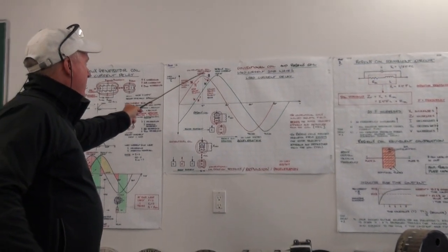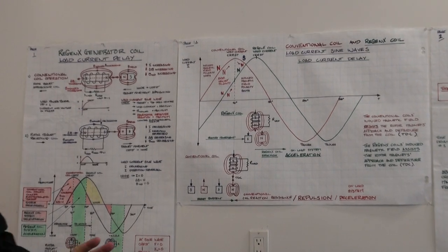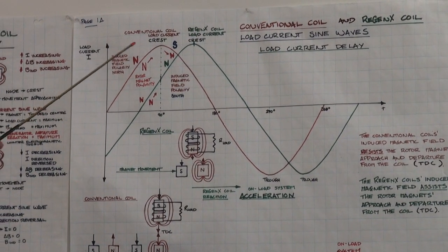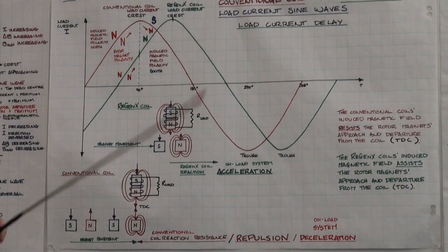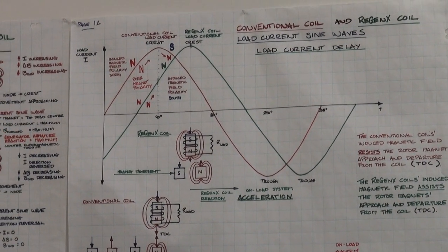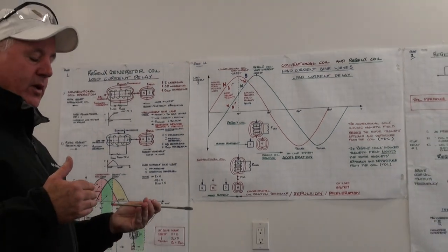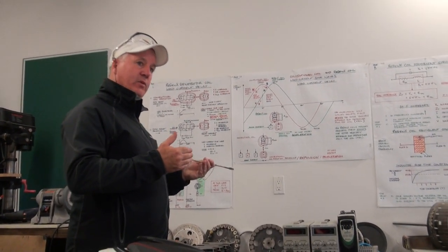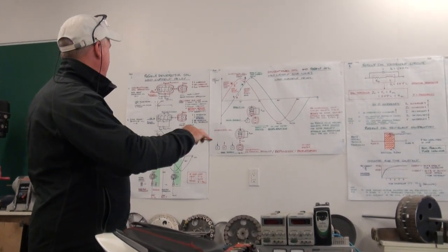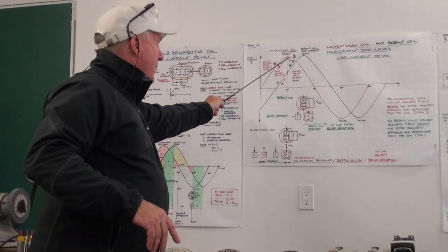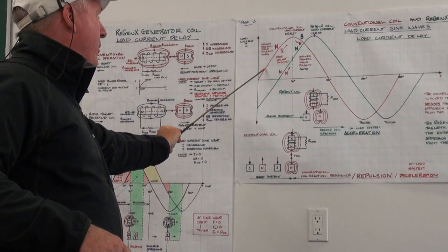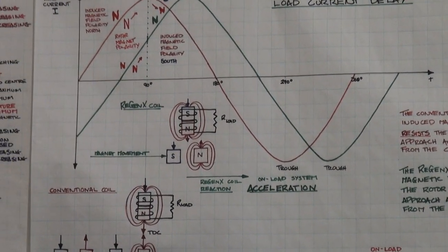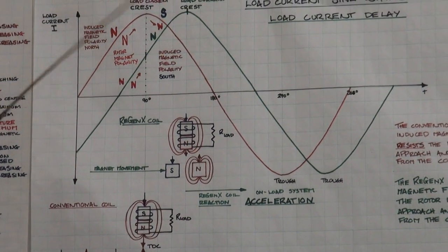The conventional coil in the prototype establishes the rotor magnet's physical position relative to the coil's core. At the crest — top dead center — the rotor magnet is directly aligned with the coil's core; that's when voltage and current are maximum. As the rotor magnet moves away, current changes direction and polarity, becoming a south pole. So here you have a north pole rotor magnet approaching the coil's core at top dead center, and here you have it moving away.